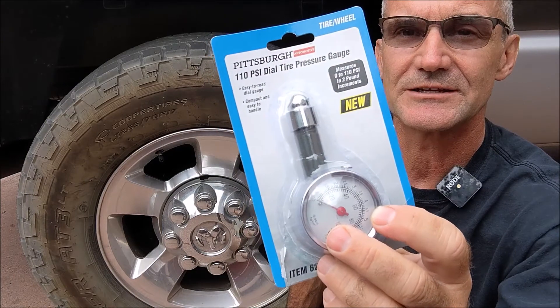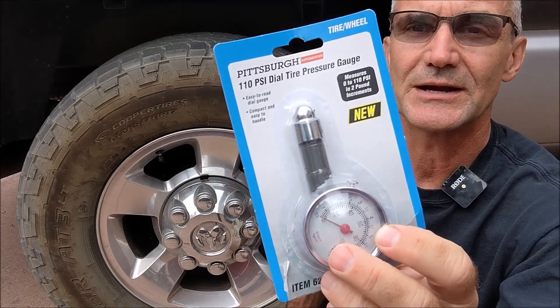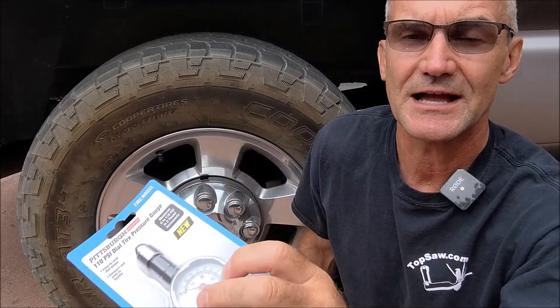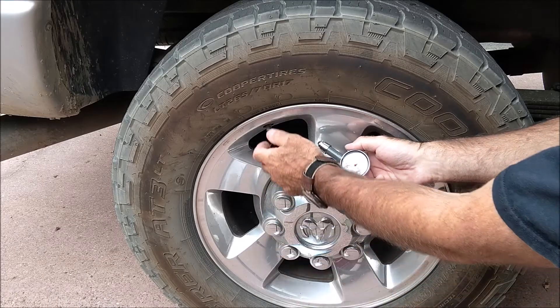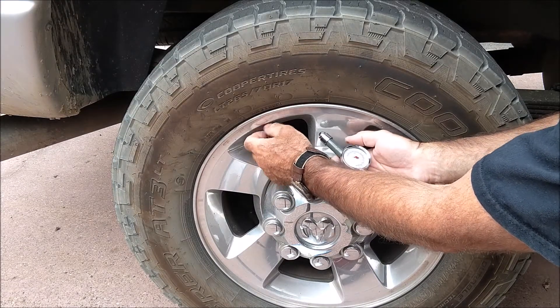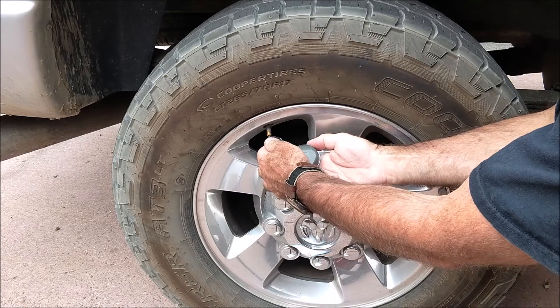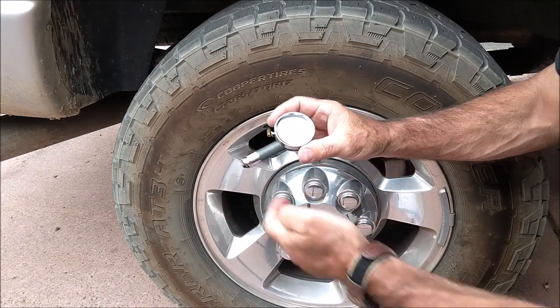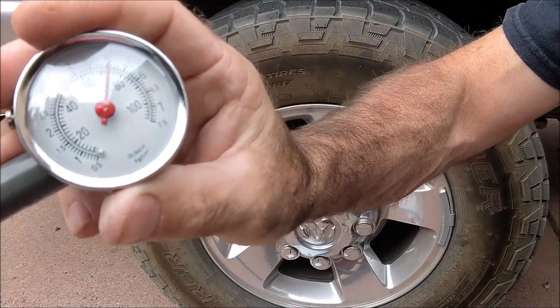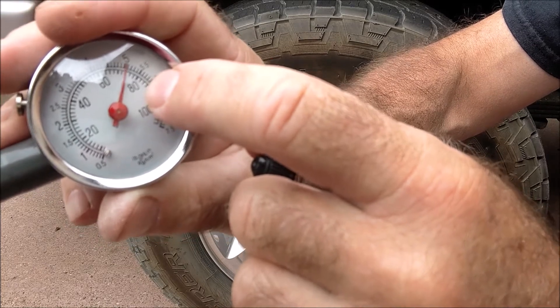This tire pressure gauge here goes from 0 to 110 psi at two pound increments. The psi is a pound per square inch. How this thing works is you can take the valve cap off, hold the tire pressure gauge on there, and see that it gets about 70 psi. So the inside gauge right there is pounds per square inch at 70 psi.